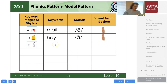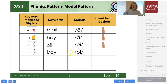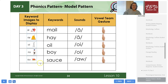Your next one is OI, like in oil, and your vowel team gesture. Then we have OY, like in boy — that's also the same sound. They're pronounced the same but spelled differently. Your next one is AW, like in sauce, and AW, like in straw. It's very important because basically you're doing three sounds: A, OY, AW. Even though you're learning six spellings, you're doing three sounds.